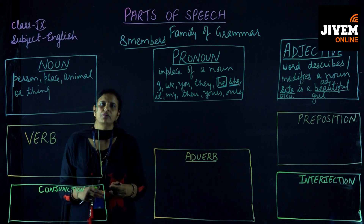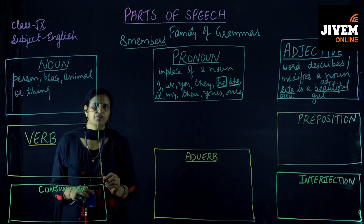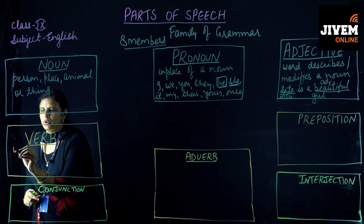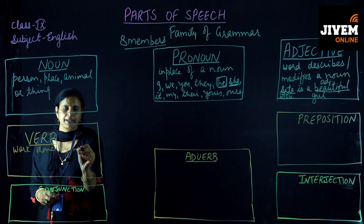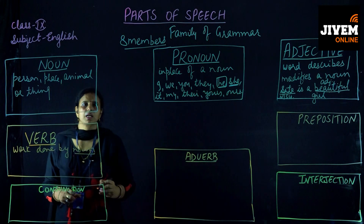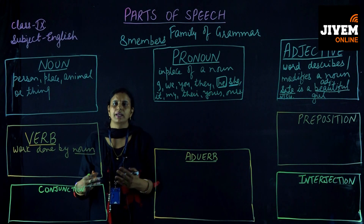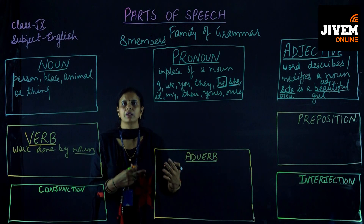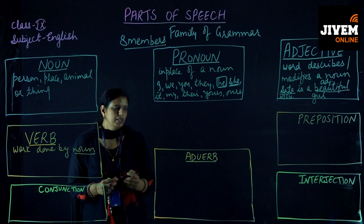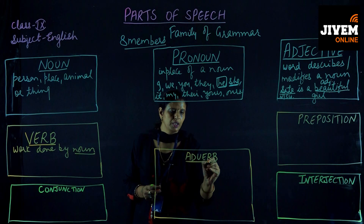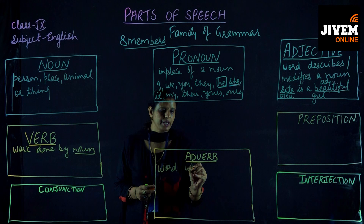The next member of the family is verb. What do you mean by a verb? Verb means the work that has been done by a noun. Whatever work is done by a noun comes into the category of verb. We can include any work like reading, sleeping, jumping, walking, talking, eating — all these words come in this category.